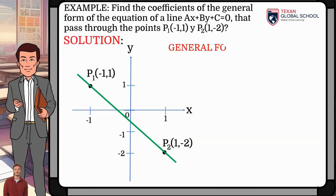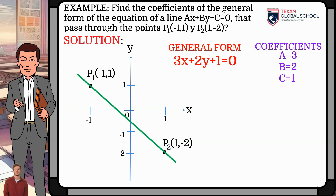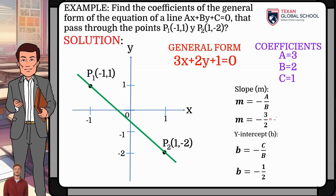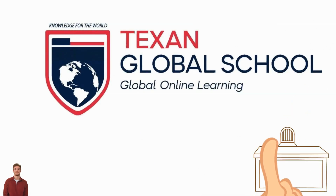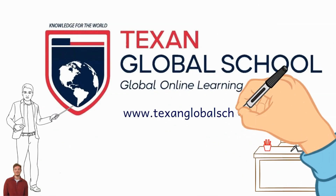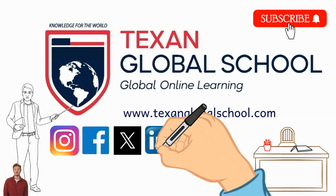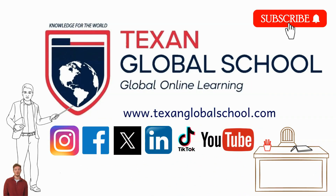In summary, we have the general form of the equation of the line given by the points P₁(−1, 1) and P₂(1, −2). Coefficients: a = 3, b = 2, and c = 1. Slope: negative 3 halves or −1.5, and y-intercept of negative 1 half or −0.5. Texan Global School — Global Online Learning. Knowledge for the World. www.texanglobalschool.com